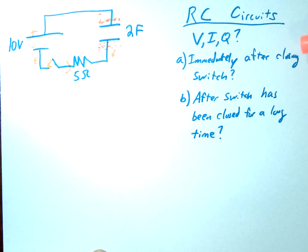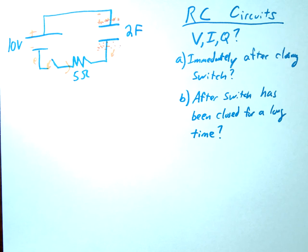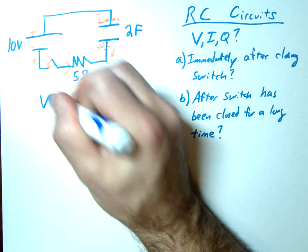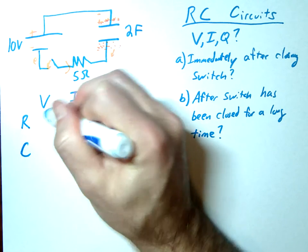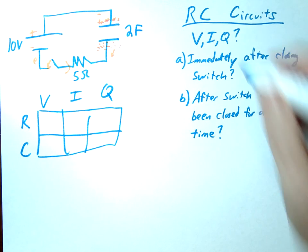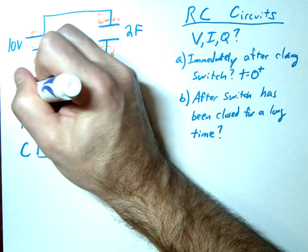There's really two situations that we're going to look at at this point, and that's going to be immediately, and then after a long time. So I'm asking you to solve for the VIQ, and that just means what's the voltage across, the current through, and the charge on these two devices. So let's just write that as VIQ. And then we're going to look at both the resistor and the capacitor, and see what happens to them both before and after. The immediately after closing the switch, we're going to call this the T equals zero plus. So it's right after that zero second time immediately after.